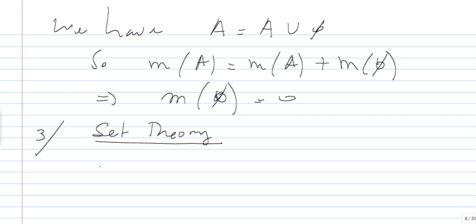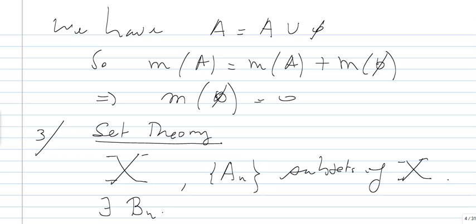So, assume that you have a big set X, and you have A_n's, which are subsets of X. And so, from here, what we are going to do is we are going to construct. So, here, there exists B_n's which are pairwise disjoint from each other.